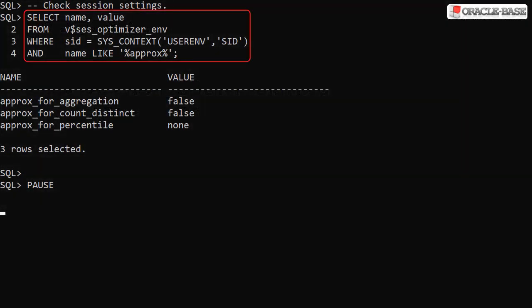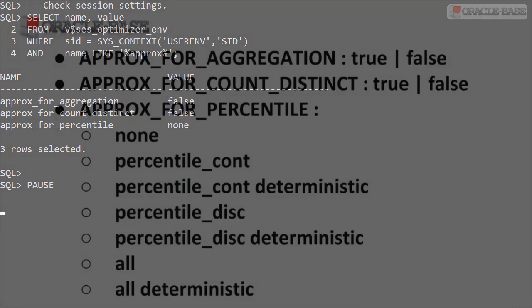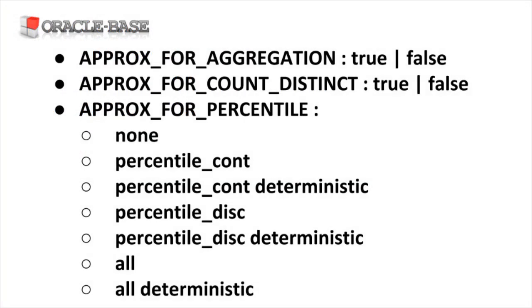This query checks the session level values of three initialization parameters related to approximate query processing. These can be set at instance or session level. The possible values are shown here. The Approx_for_Aggregation parameter can be used as a top-level all-or-nothing switch, so we'll use this here to keep things simple.